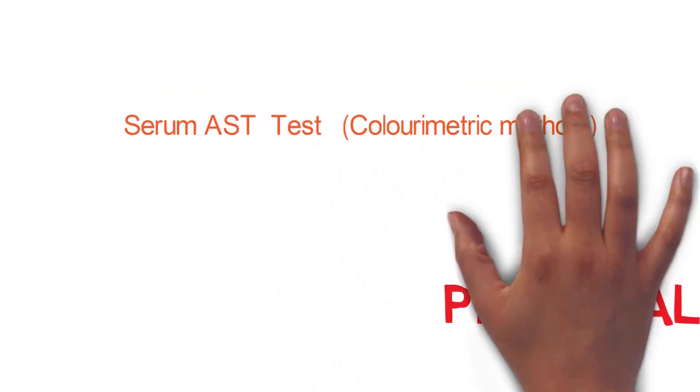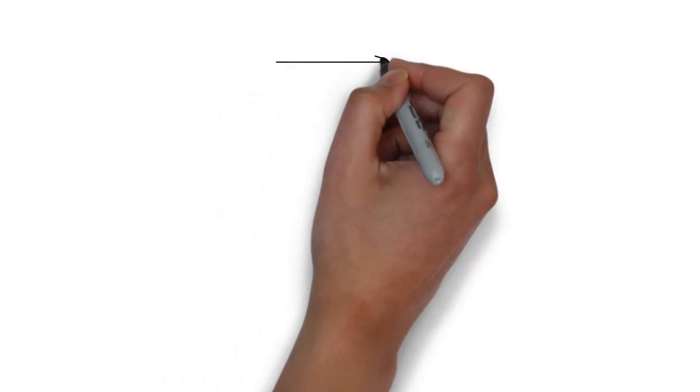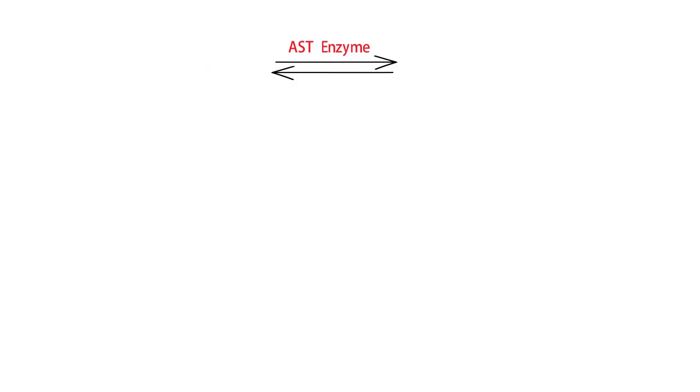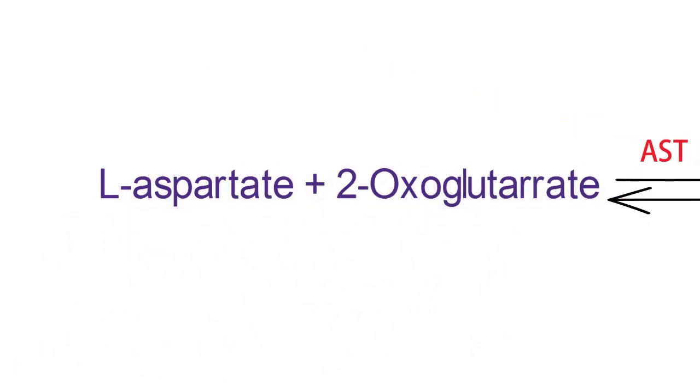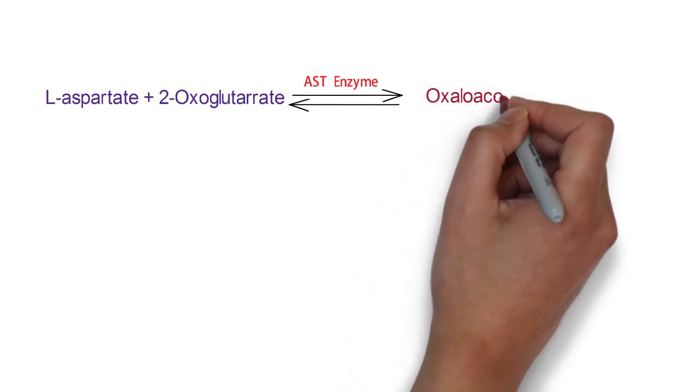The AST enzyme catalyzes the reversible transamination of L-aspartate and 2-oxoglutarate to form oxaloacetate and L-glutamate.